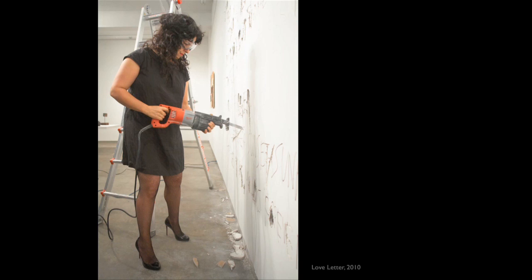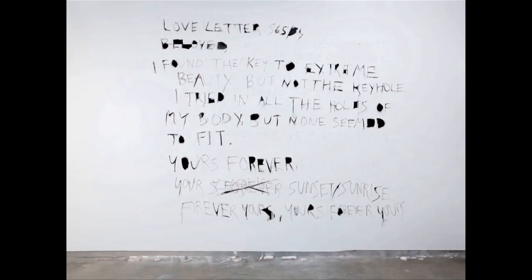Imagine this in the ladder — the top lines — and the love letter goes like this: Love letter 565 slash 34. Beloved, I found the key to extreme beauty but not the keyhole. I tried it in all the holes of my body but none seemed to fit. Yours forever, your sunset, sunrise, forever yours, yours forever, yours.